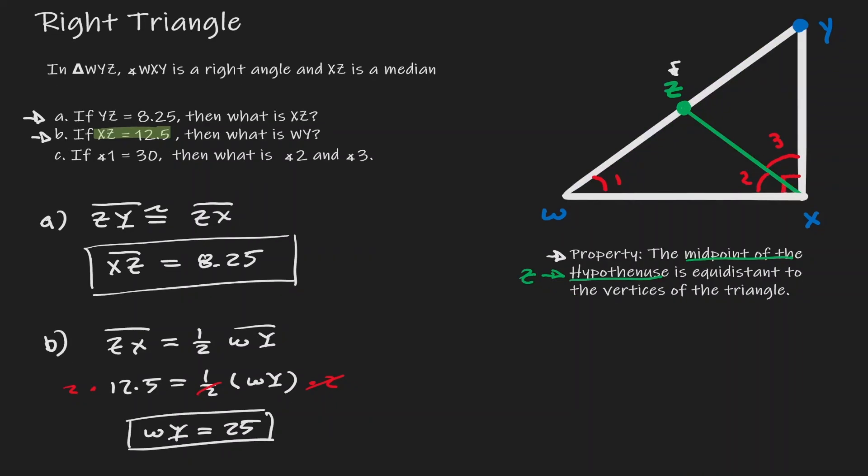Now let's constrain the last example here, example c. We are given certain information, and that is that angle 1 has a length of 30 degrees, which you can find here. What we want to find information of is the value for angle 2 and angle 3, which you can find here.